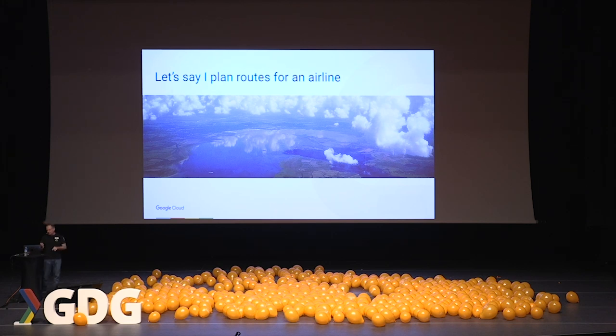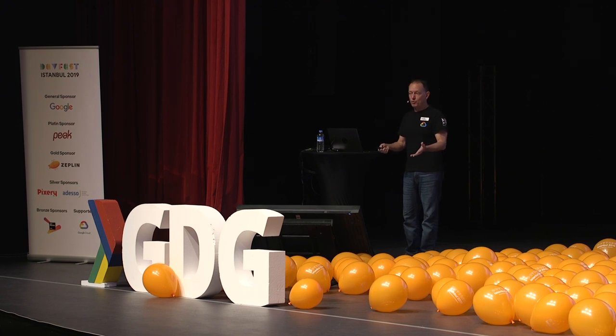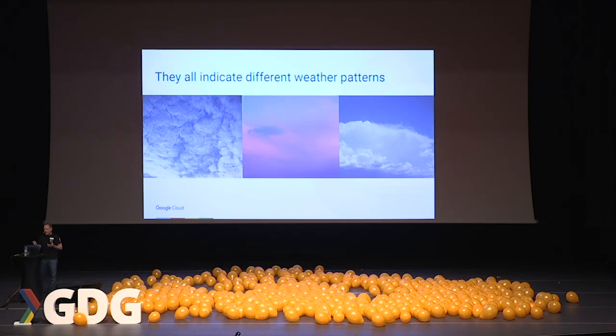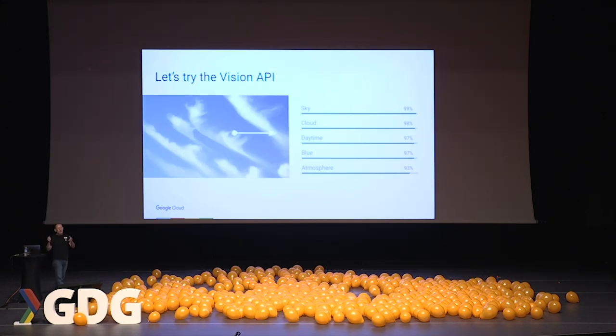Let's say I plan routes for an airline. I'm using the best weather data available — models built by NOAA and various national weather services. But I have a fleet of planes with cameras on board, so I could be getting much better local predictions by just looking out the window. I want to build a model to inform flights following along the same routes. There are a bunch of different types of clouds, and they all indicate different types of weather. I could submit one of these images to the standard Vision API, and it would say yes, sure enough, that's a cloud — but it won't tell you what type of cloud, and certainly won't make a weather prediction based on that type.